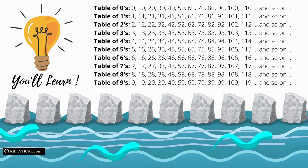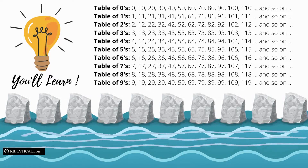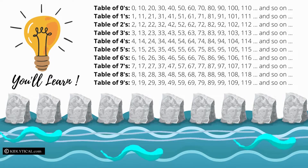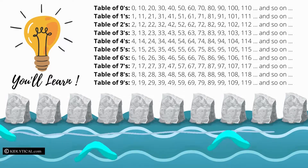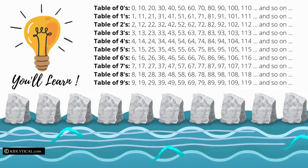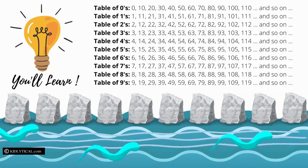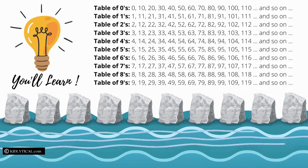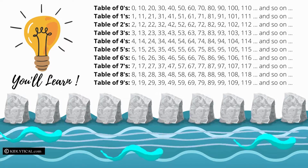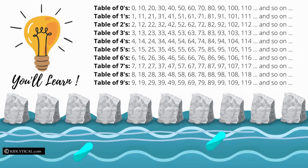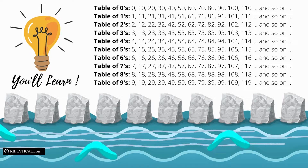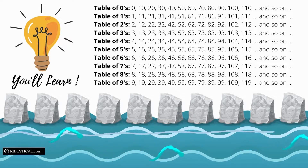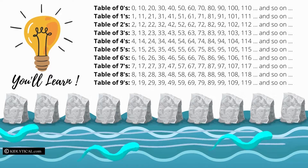...till table of nines — like table of 9, 19, 29 — and higher numbers like 109, 119, and so on. These 10 basic concepts, from table of zeros till table of nines, will help you master the entire multiplication table family.